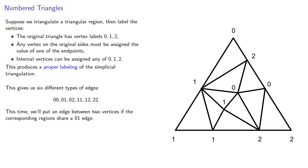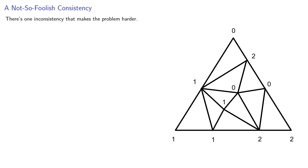This time, we'll create a graph by putting an edge between two vertices if the corresponding regions share a 01 edge. Now, there's one inconsistency that makes the problem harder. All three edges of any interior triangle are the edges of another triangle.